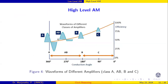Now we will see what class A, class B, and class C mean. The x-axis is the conduction angle and the y-axis is efficiency. Class A gives the entire signal — whatever input you give, it produces output — but the efficiency is only 50% and it conducts for the entire cycle, that is 360 degrees. Class AB conducts for the positive cycle and part of the negative cycle, and it is also around 50% efficiency.